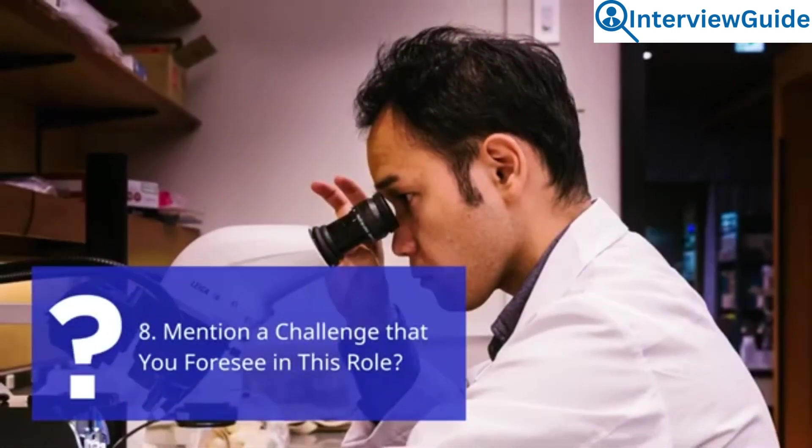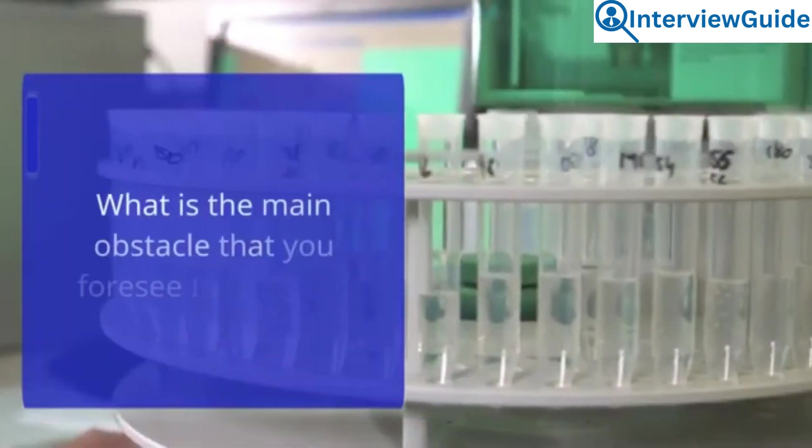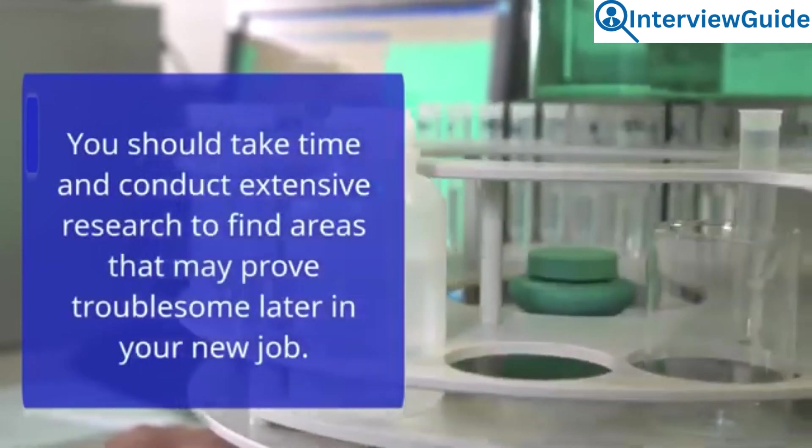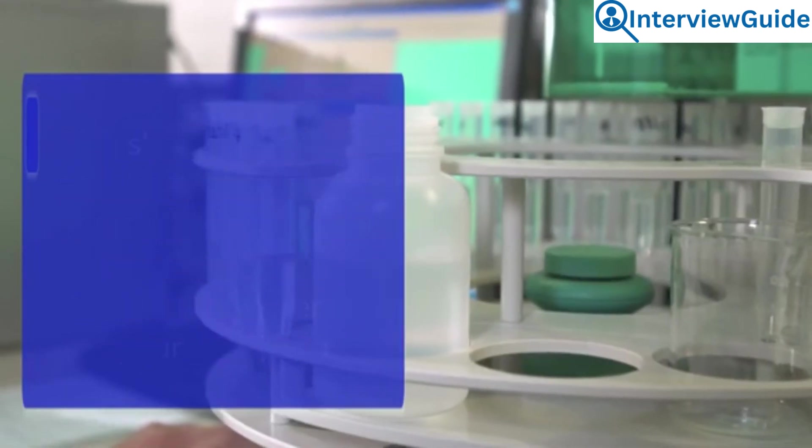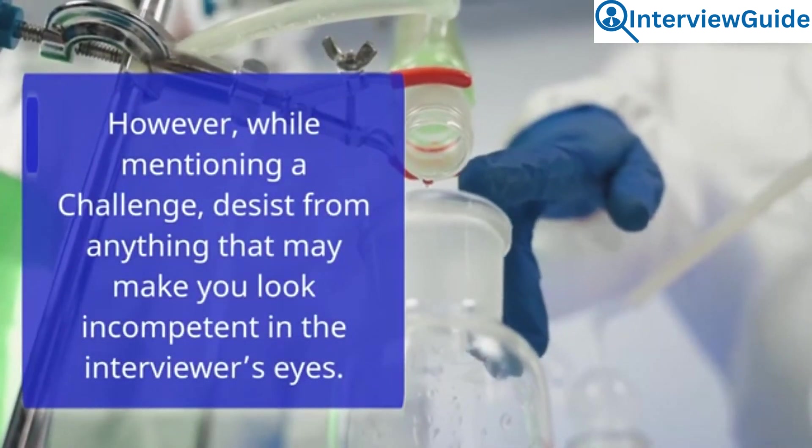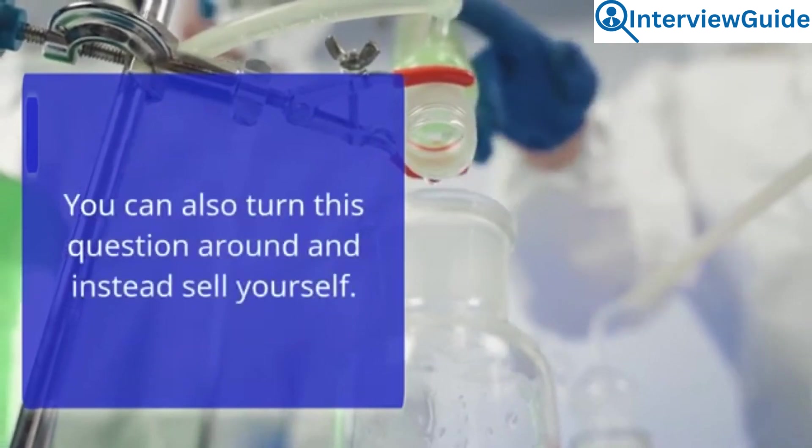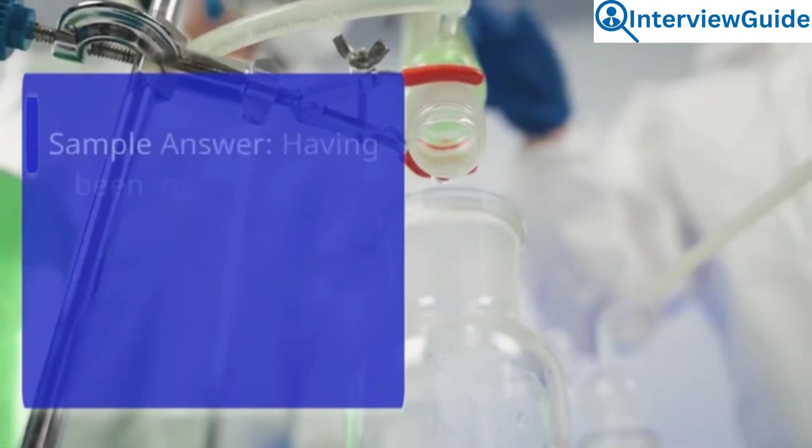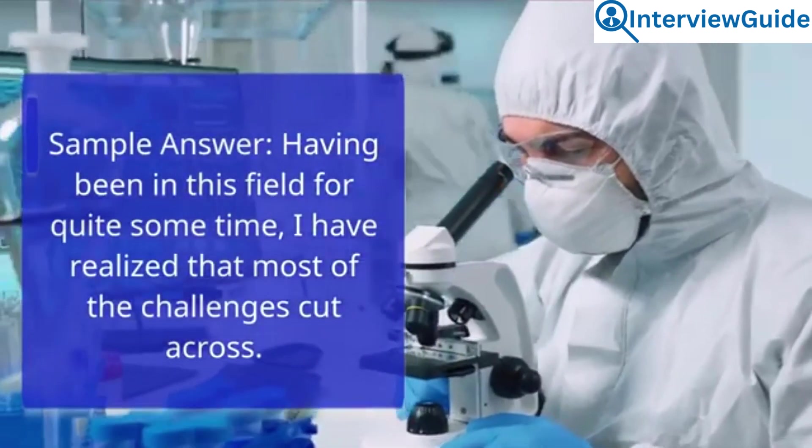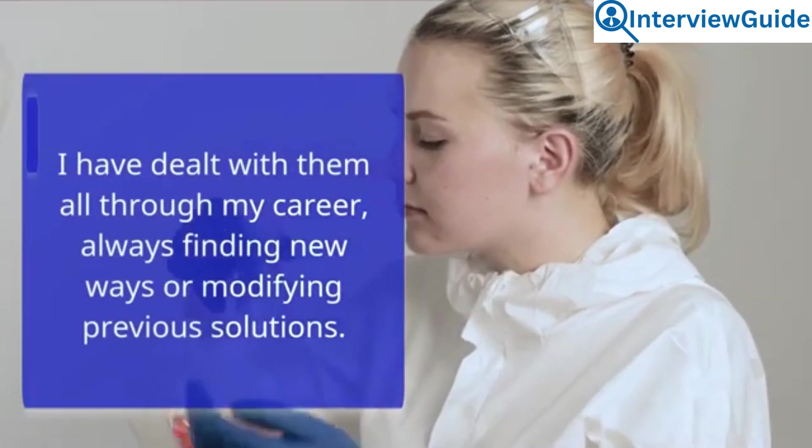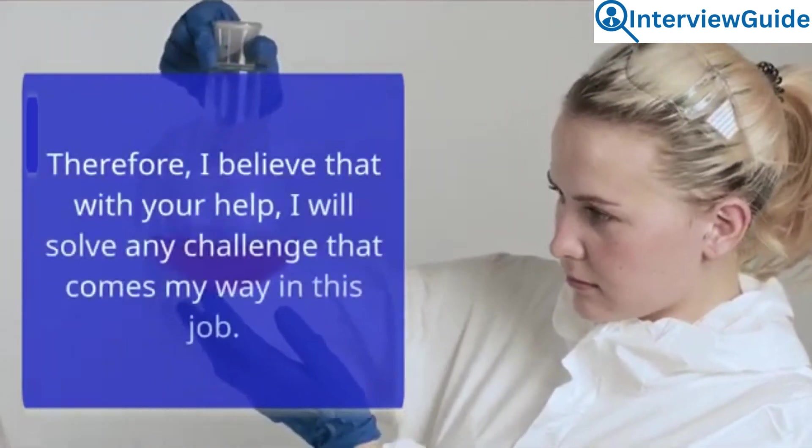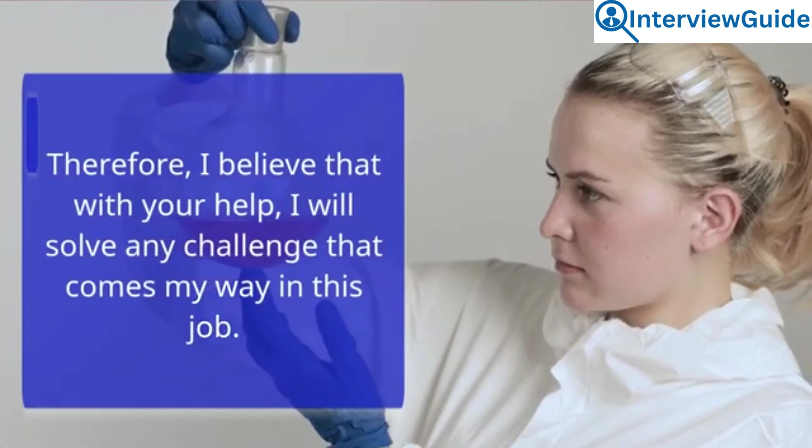Question 8: Mention a challenge that you foresee in this role. What is the main obstacle that you foresee in this job? You should take time and conduct extensive research to find areas that may prove troublesome later in your new job. However, while mentioning a challenge, desist from anything that may make you look incompetent in the interviewer's eyes. You can also turn this question around and instead sell yourself. Sample answer: Having been in this field for quite some time, I have realized that most of the challenges cut across. I have dealt with them all through my career, always finding new ways or modifying previous solutions. Therefore, I believe that with your help, I will solve any challenge that comes my way in this job.